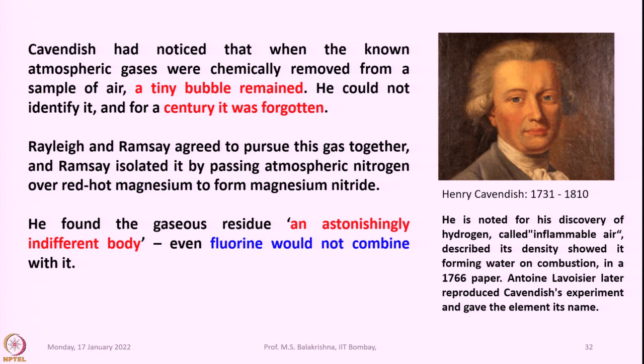That means a very small minute quantity of gas left after completely consuming nitrogen by treating it with red-hot magnesium to form magnesium nitride was found to be inert compared to fluorine. Why mention fluorine? Fluorine is the most reactive element and can combine with literally any element present in the periodic table. That is the reason he says it is an astonishingly indifferent body — even fluorine would not combine with it.